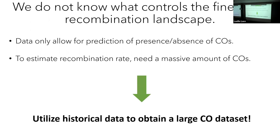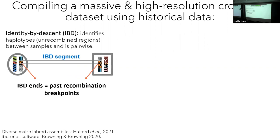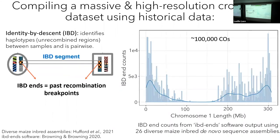To sidestep this, I used historical data to get a really large crossover data set. The way I went about getting this is to use identity by descent analysis, also called IBD analysis. IBD analysis essentially identifies haplotype blocks or unrecombined regions between samples. Two individuals share an IBD segment because they have shared ancestry. Over many generations and lots of recombinations, you get smaller and smaller segments, and at the boundaries of them, we can infer past recombination breakpoints. I did an IBD analysis on 26 diverse maize inbreds with high quality de novo assemblies and found about 100,000 crossovers for just chromosome 1.